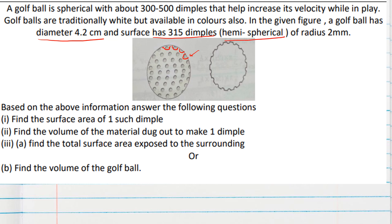Hemispherical shape is also given over there, radius 2 mm. This hemispherical radius is given as 2 mm.